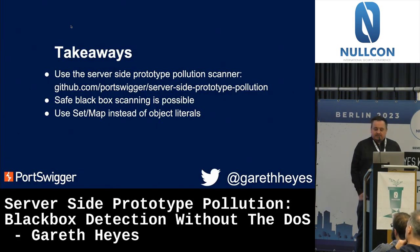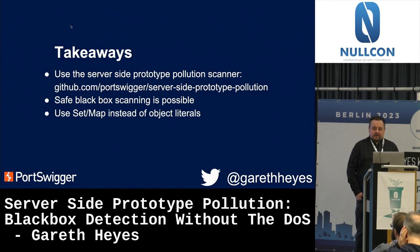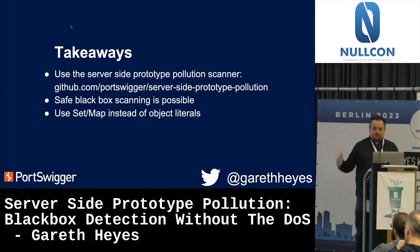Thanks for listening. The three key takeaways: use the server-side prototype pollution scanner to find prototype pollution in your apps; safe black box scanning is possible; and use Set or Map instead of objects when defining options-like behavior or accepting lists of values. You can follow me on Twitter at Gareth Hayes, where I post all sorts of crazy JavaScript, and get the prototype pollution scanner from GitHub.